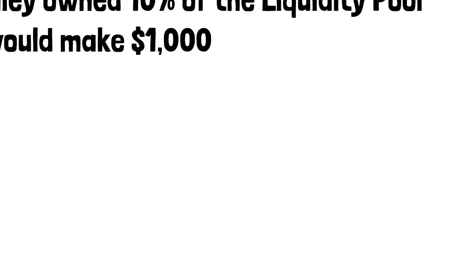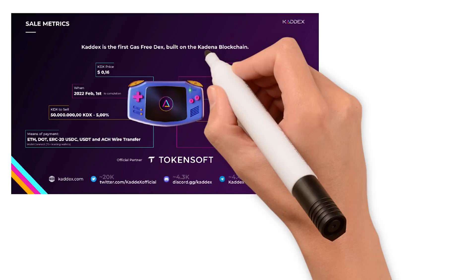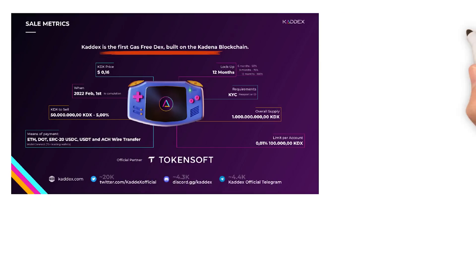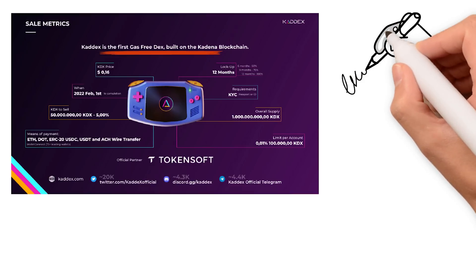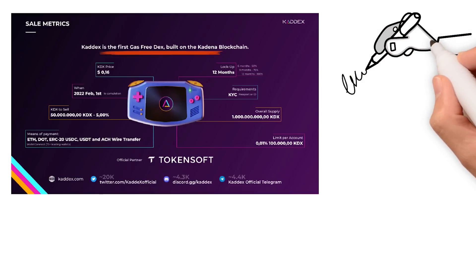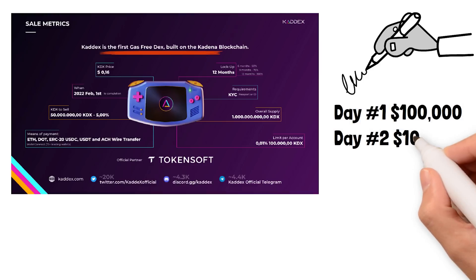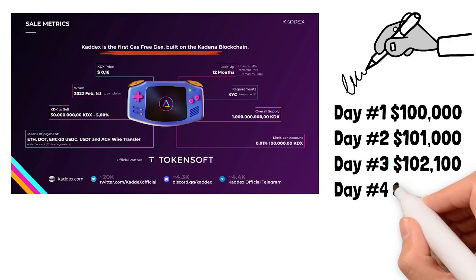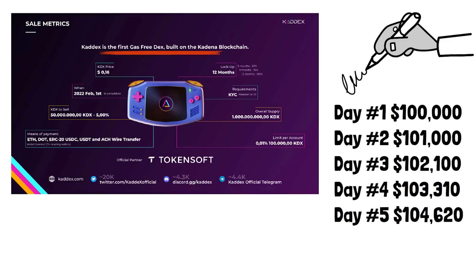What's even cooler about KadeX is that it doesn't charge gas fees. This means KadeX doesn't need you to sign a transaction to compound your rewards — it can automatically compound them for you. For example, if you started with $100,000 making 1% ROI per day: day one you'd have $100K, day two $101K, day three $102.1K, day four $103.31K, and day five $104.62K. Your rewards compound exponentially.